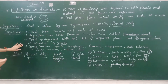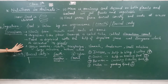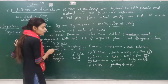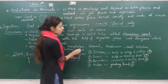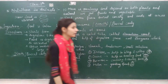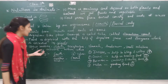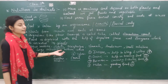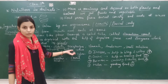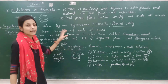What are the organs in digestion? The first one is the mouth, then oesophagus, stomach, duodenum, small intestine, large intestine, rectum and anus. These are the organs in digestion.